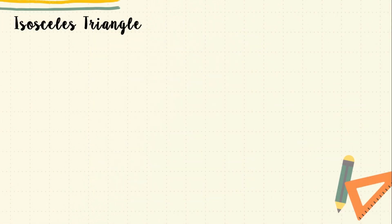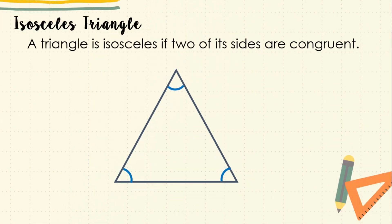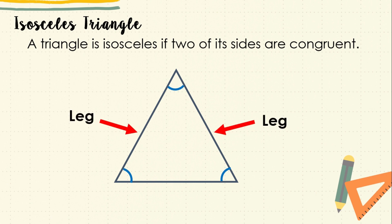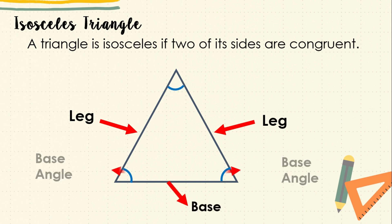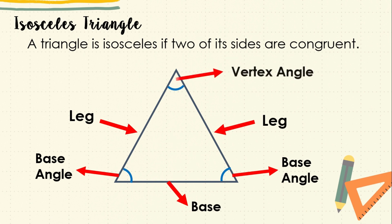By definition, a triangle is isosceles if its two sides are congruent. These two congruent sides are its legs, and the third side is the base. The angles opposite the congruent sides are the base angles, and the third angle that is included by the legs is the vertex angle. These are the parts of an isosceles triangle.